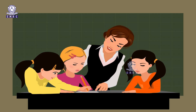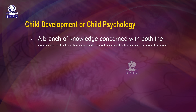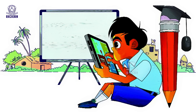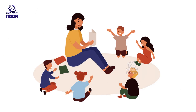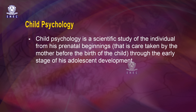Child development or child psychology as a field is defined as a branch of knowledge concerned with both the nature of development and regulation of significant structural and behavioral changes occurring in children as they advance in age and maturity. It deals with understanding the development of characteristics of children and the process through which development occurs. In most cases, emphasis is on collection of data and the methods to deal with such cases. According to Crowe and Crowe, child psychology is a scientific study of the individual from his prenatal beginnings — that is, care taken by the mother before the birth of the child — through the early stages of his adolescent development.